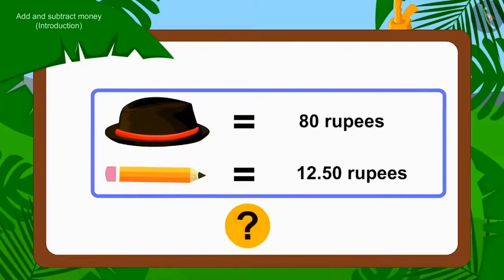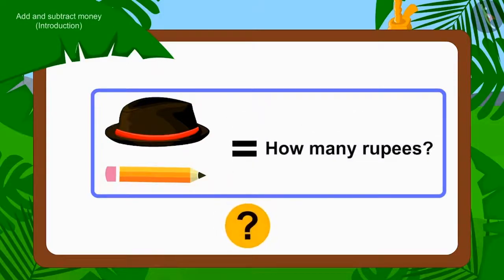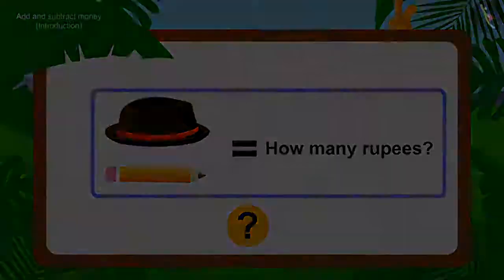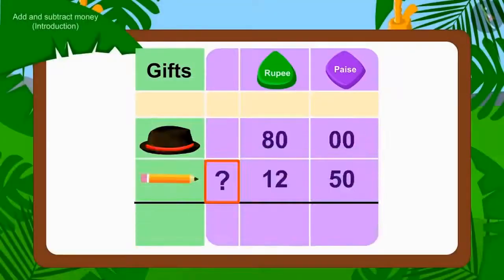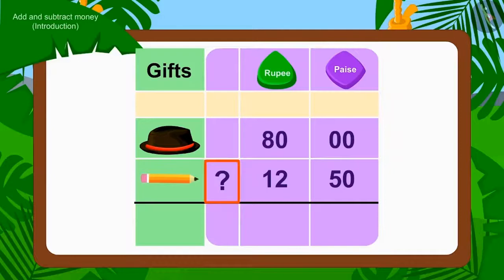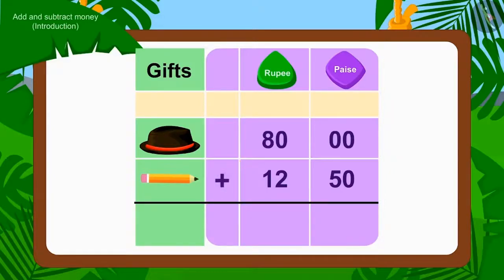Children, can you tell how much money will they have to pay to buy the gift? What operation do we have to use to do this? Absolutely right — Addition!